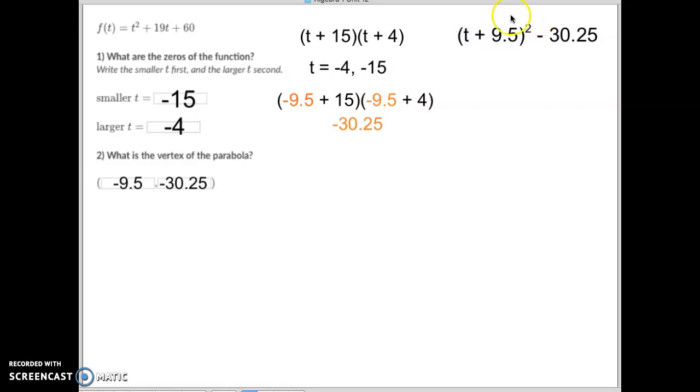Now when we do that, 9.5 squared comes out to be like 90.25. Well if I'm adding 90.25 then I also, to keep it fair, have to subtract 90.25. And when I subtract 90.25 from 60, which was already there, I end up with negative 30.25.